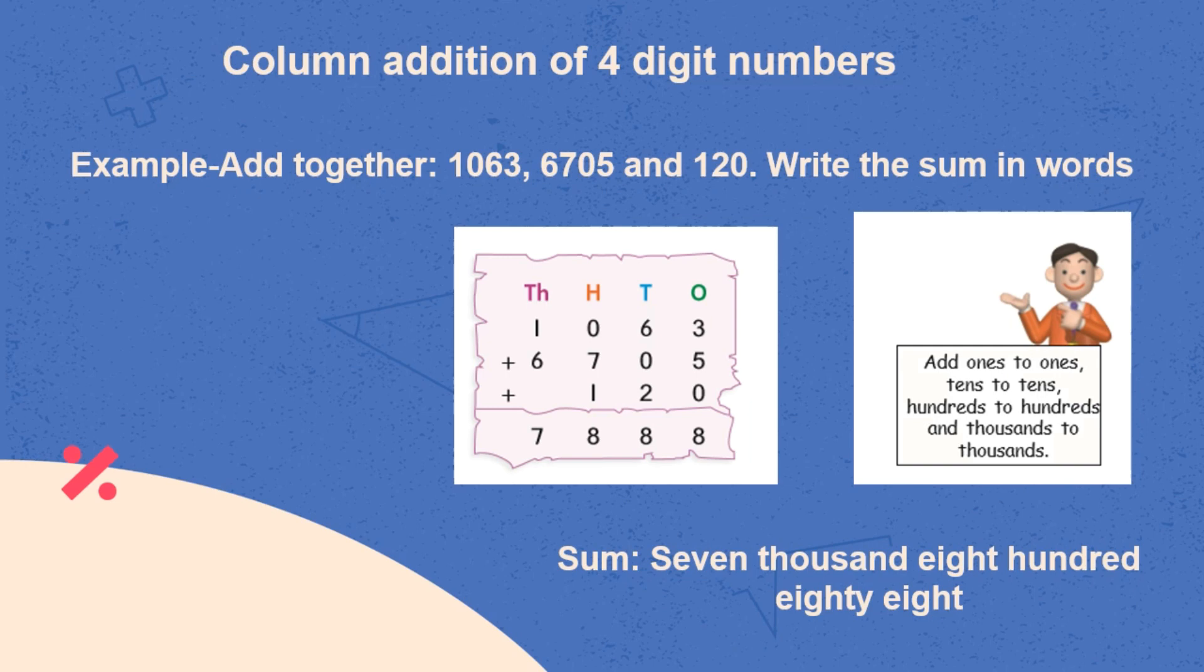Now let us see Addition of 4 digit numbers. It is same as we add 3 digit numbers. The only difference is that here we have numbers at 1000's place also. So, in this example, we have added 1063, 6705 and 120.